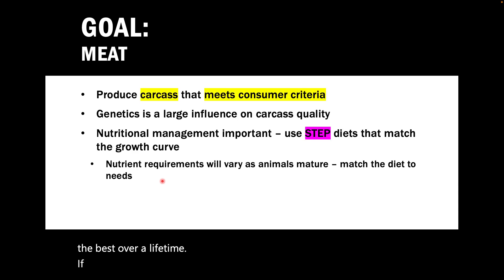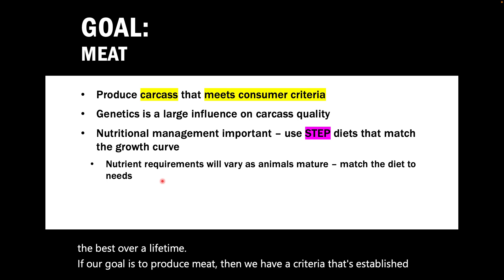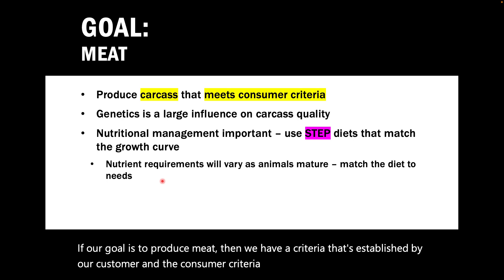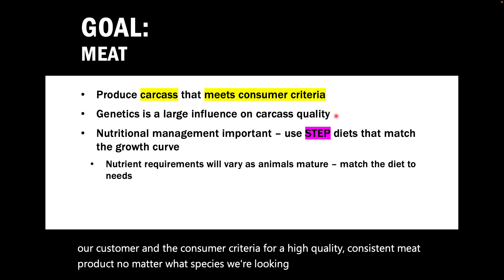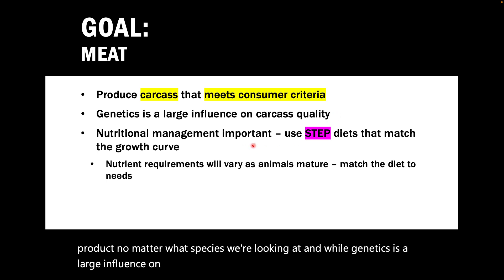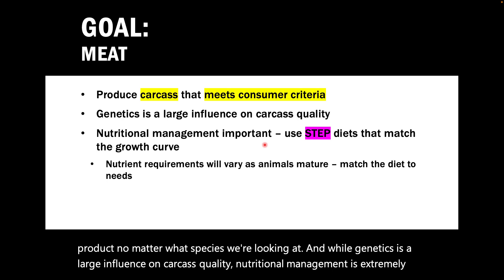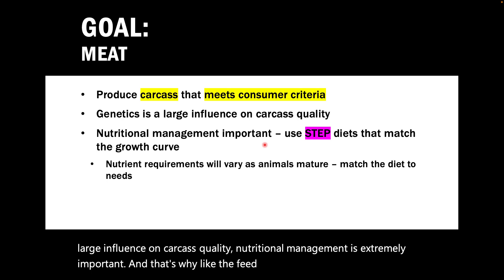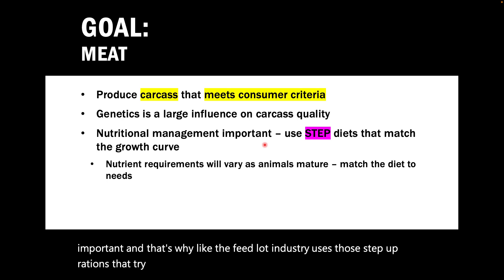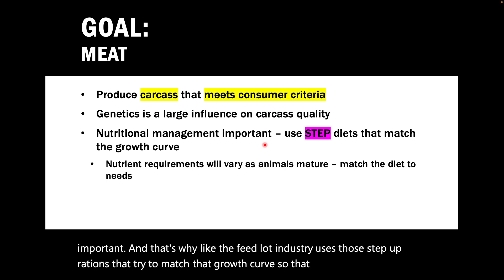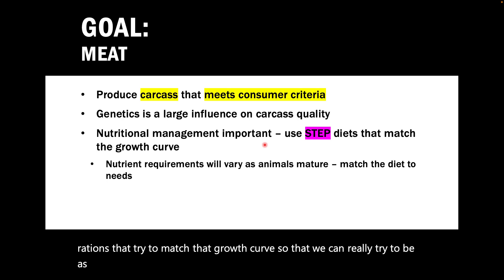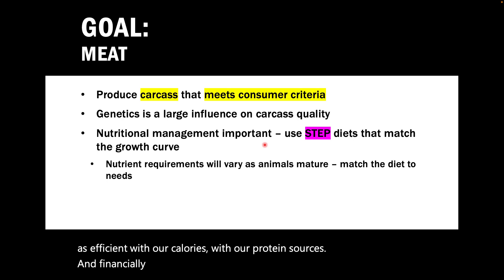If our goal is to produce meat, then we have criteria established by our customers and consumers for a high-quality, consistent meat product, no matter what species we're looking at. While genetics is a large influence on carcass quality, nutritional management is extremely important. That's why the feedlot industry uses those step-up rations that try to match the growth curve — so we can be as efficient as possible with our calories, protein sources, and finances, ensuring that animals' needs match that sigmoid growth curve.